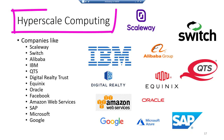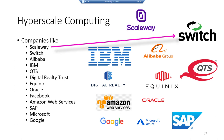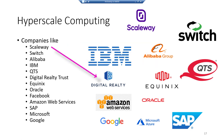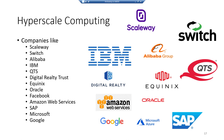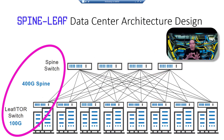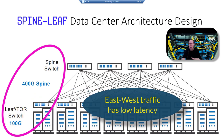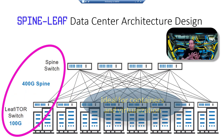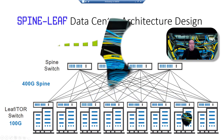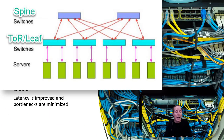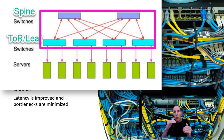This brings us to hyperscale computing. Companies like Scaleway, Switch, Alibaba, IBM, QTS, Digital Realty Trust, Equinix, Oracle, Facebook, Amazon Web Services, SAP, Microsoft, and Google have a tremendous ability to scale their computing and network — that's what spine-leaf topology is all about. Spine-leaf or spine-TOR architecture provides lower cost design, incredible east-west traffic performance, and hyper-scaling capability. Latency is also a key advantage: because each TOR switch is only one hop away from another, east-west traffic has very low latency.